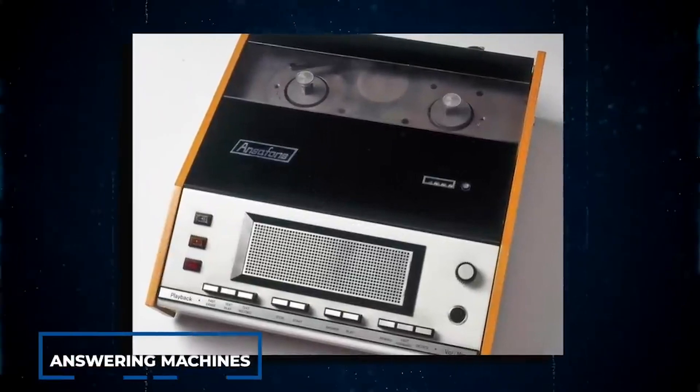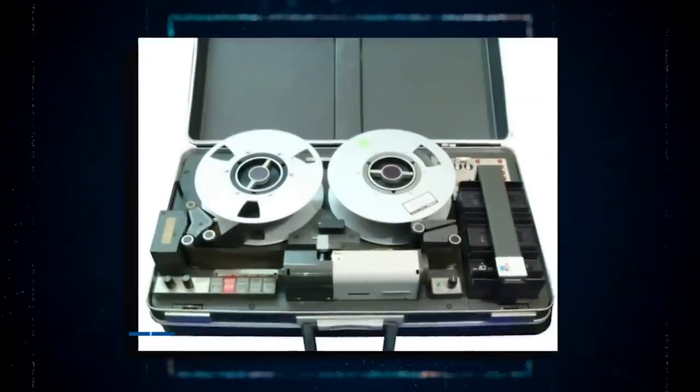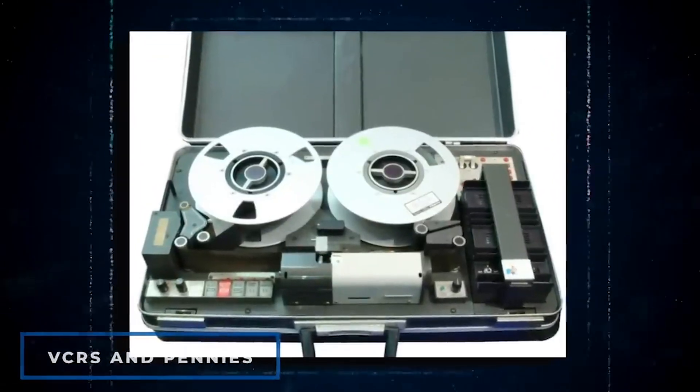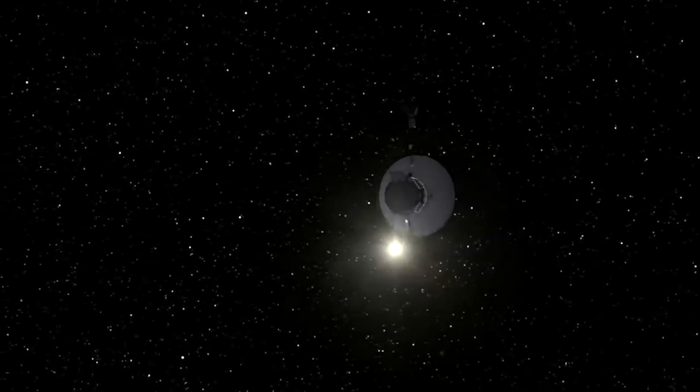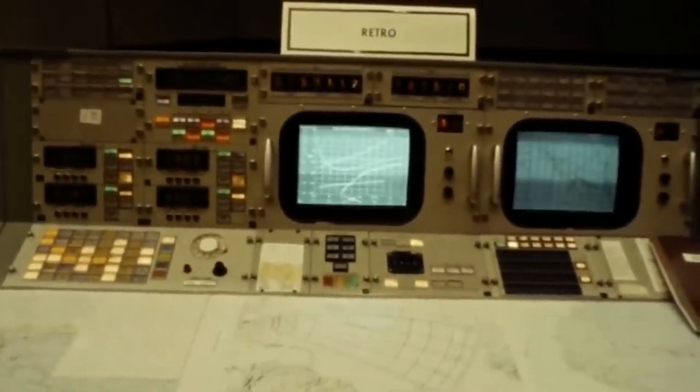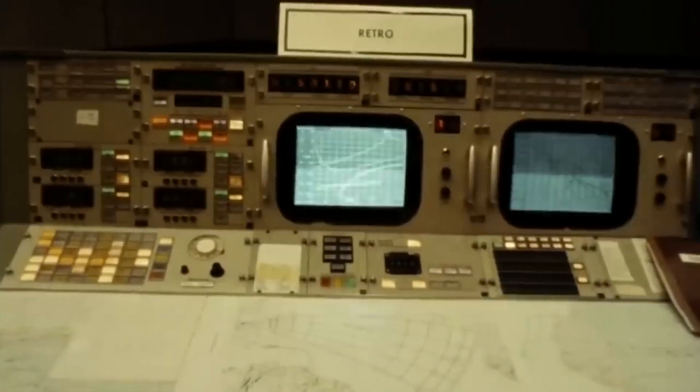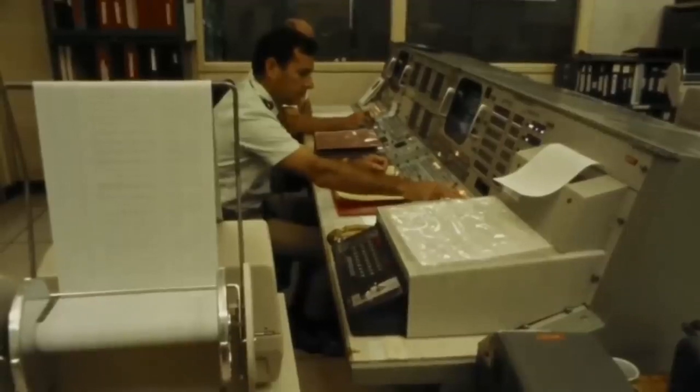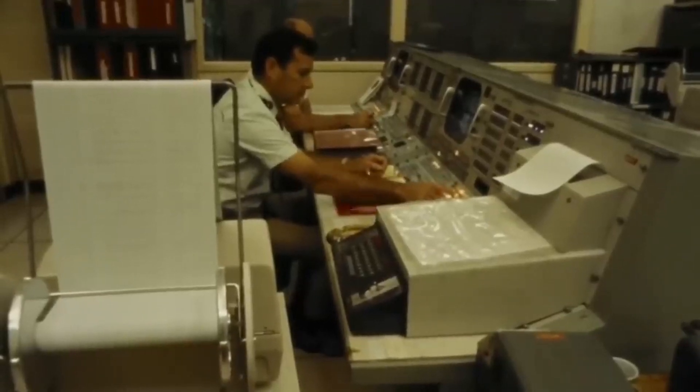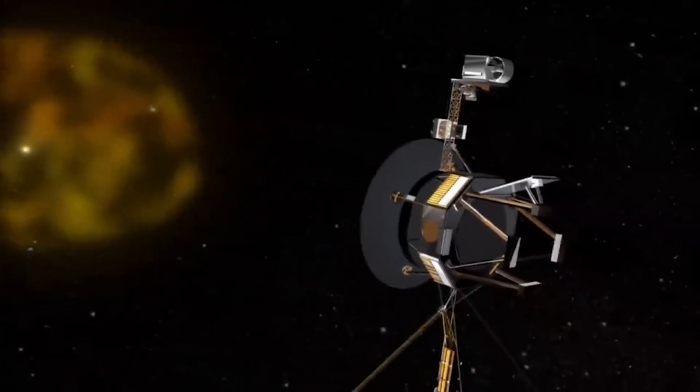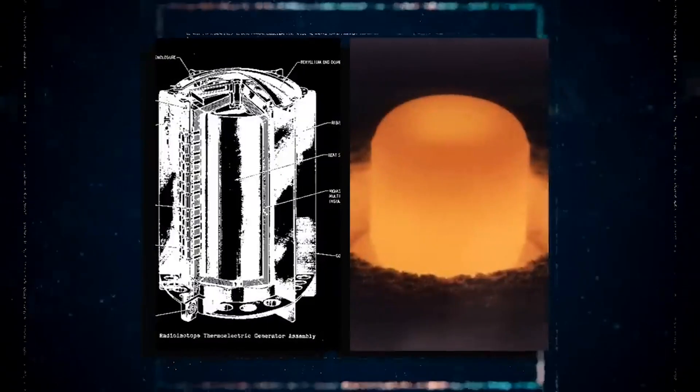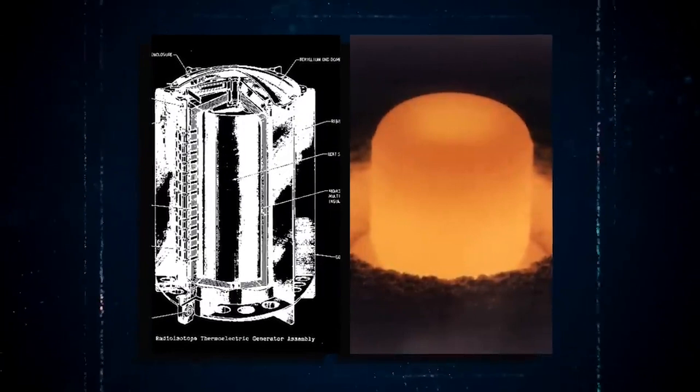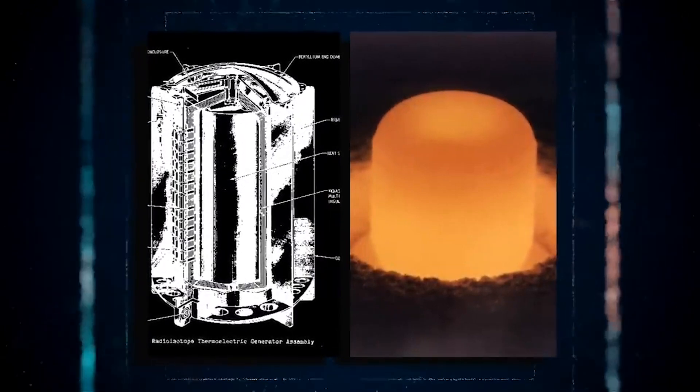However, while some technologies like answering machines, VCRs, and pennies have become obsolete, the Voyagers continue to defy the odds with their outdated yet resilient systems. These spacecrafts are powered by technology from 50 years ago, with minimal software to operate them, and their designers couldn't rely on complex lines of code. Voyager 2 currently has five operational instruments, while Voyager 1 has four, all powered by a mechanism that converts heat from plutonium's radioactive decay into electricity.